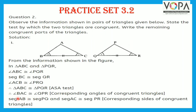Therefore, the remaining congruent parts are: angle BAC is congruent to angle QPR — corresponding angles of congruent triangles. Then side AB is congruent to side PQ, and side AC is congruent to side PR — these are the corresponding sides of congruent triangles.